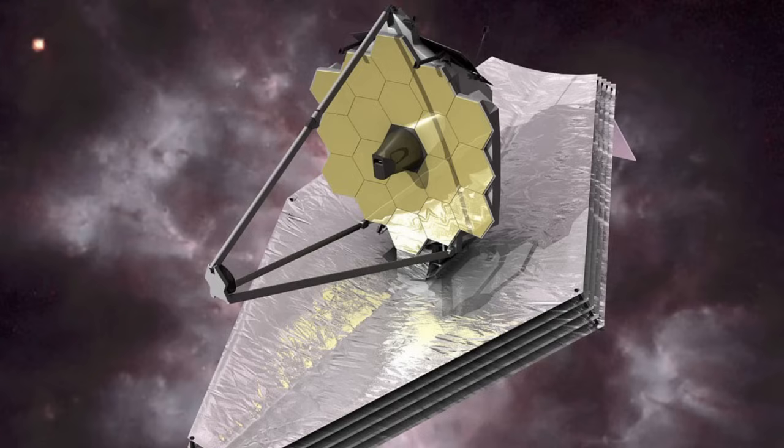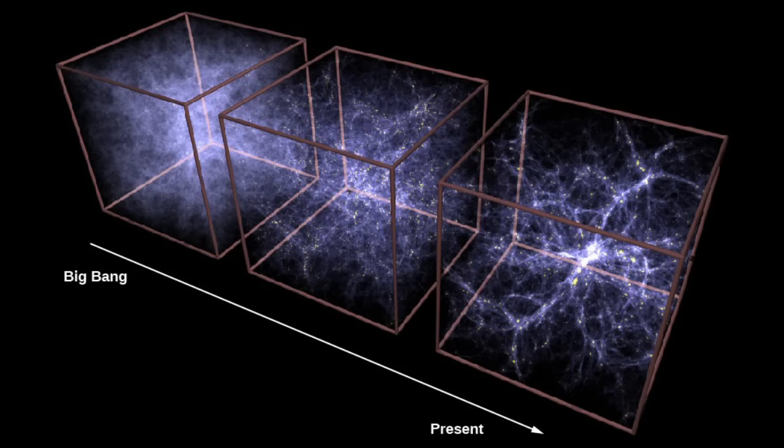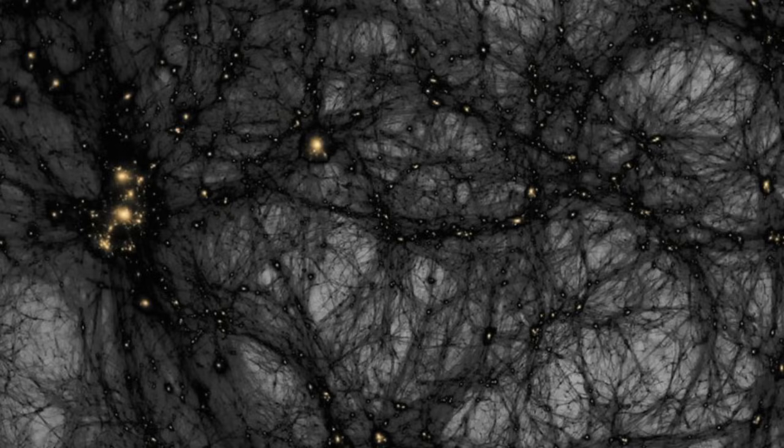But for all the hoo-ha in the press about Webb disproving the Big Bang, in October, a team of researchers in Ireland and Georgia Tech ran a high-resolution simulation of the early universe, and found that by factoring in dark matter and population three stars, gigantic stars believed to have existed in the first years of the universe, it did not conflict with James Webb's observations.